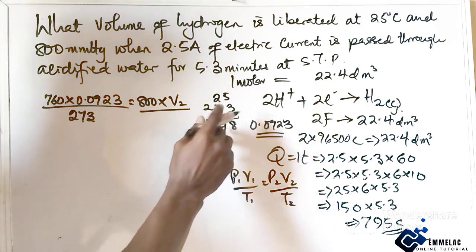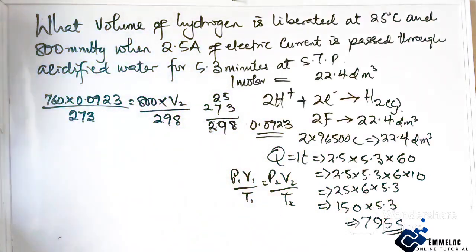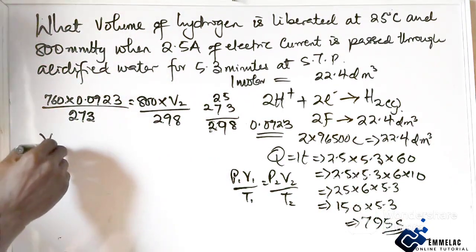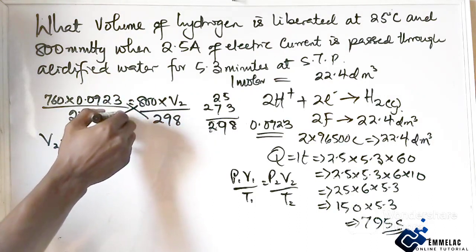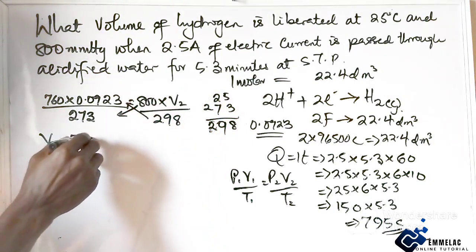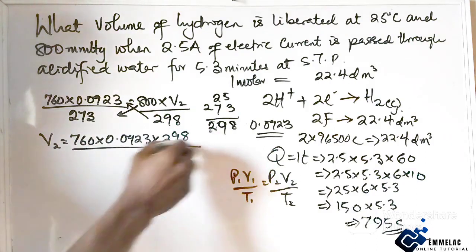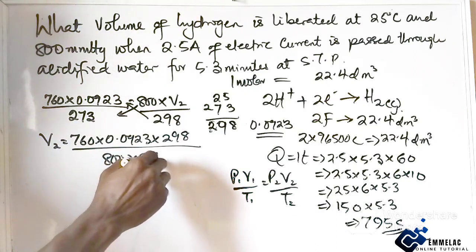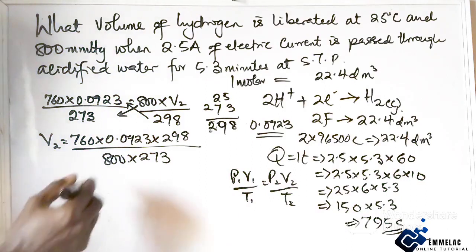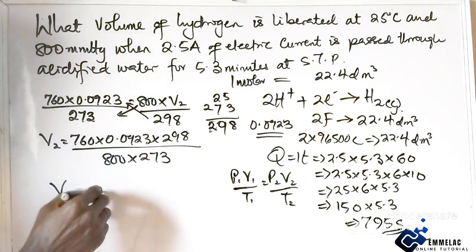Making V the subject of the formula, we have V equals 760 times 0.0923 times 298 over 800 times 273. Using our calculator, we finally get 0.1 decimeter cube. This is the final answer.